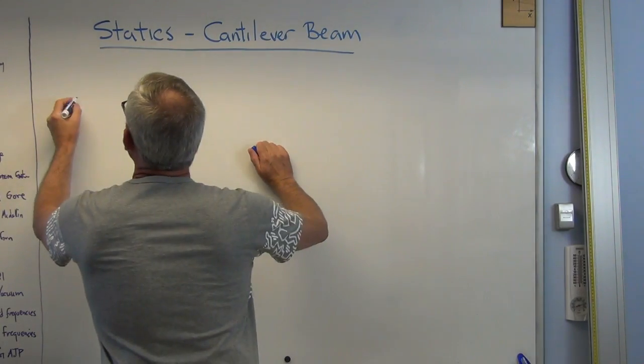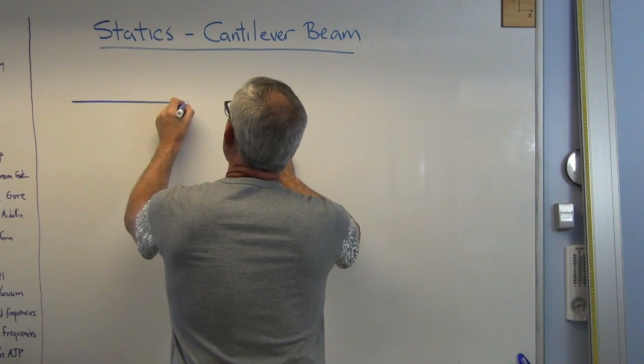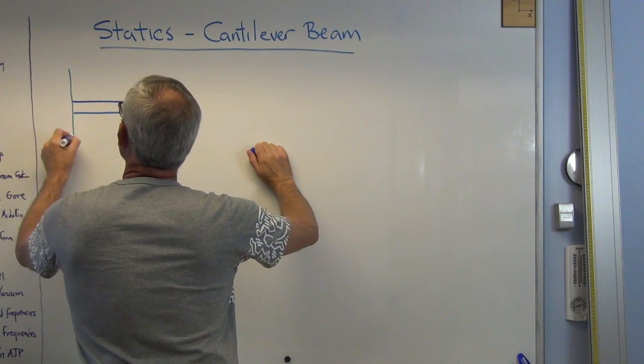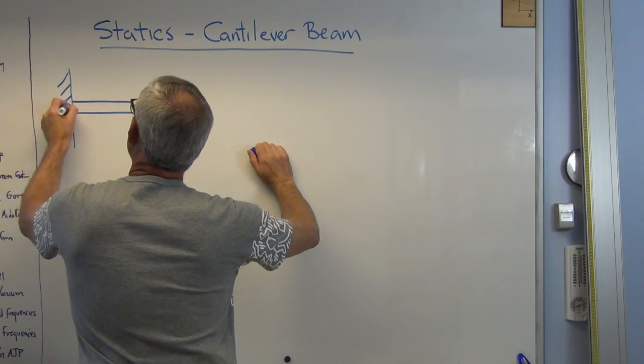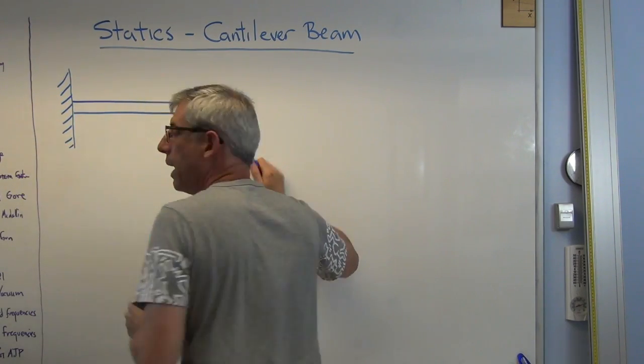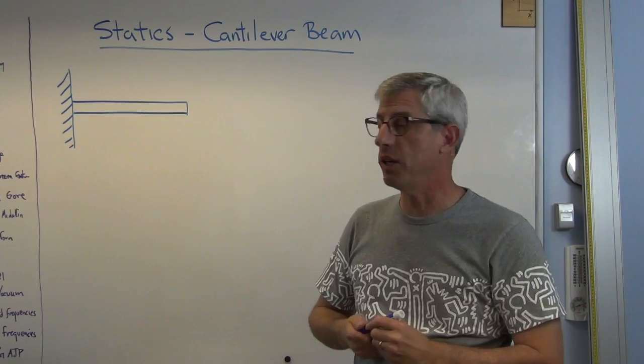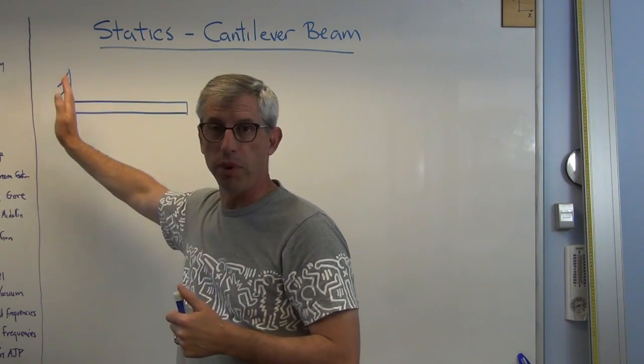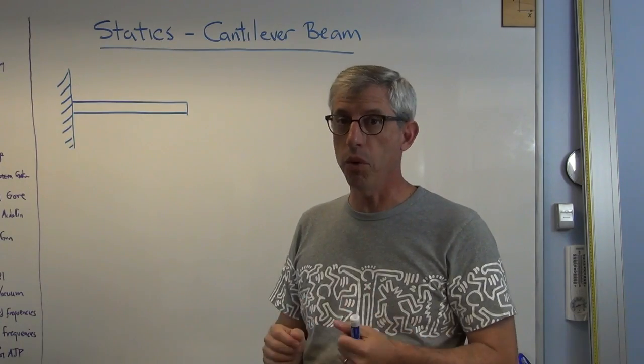So I'm going to start here. Let's say we've got a beam, and it's a cantilevered beam. Cantilevered means it's fixed. So fixed means it's sunk into a block of concrete, so it can't move.